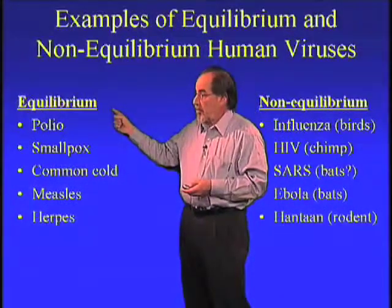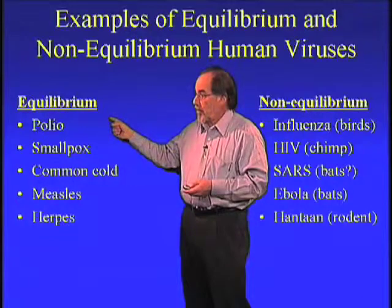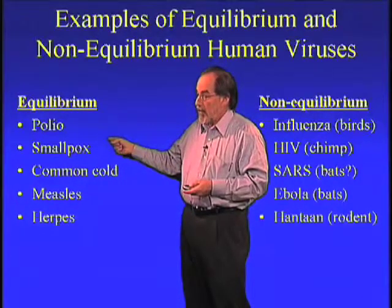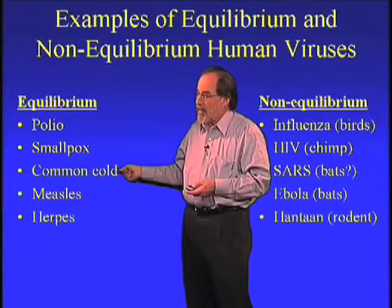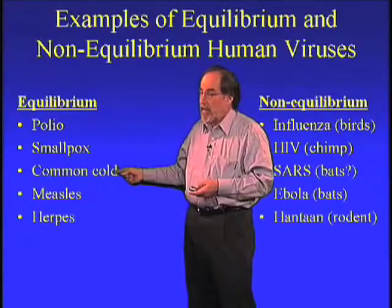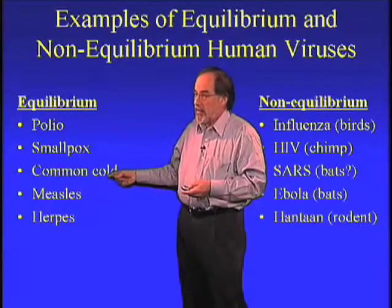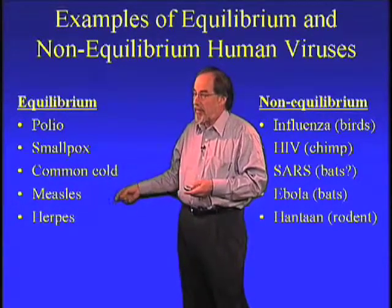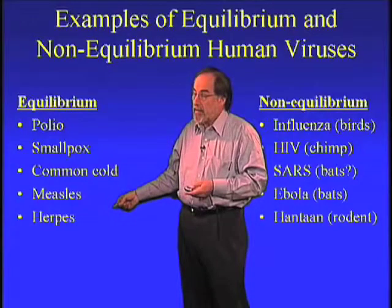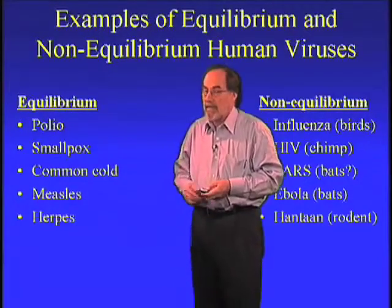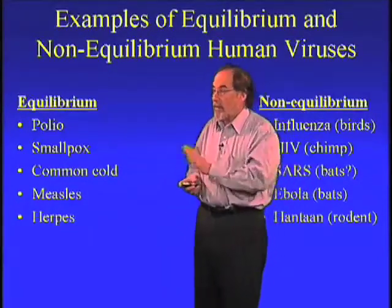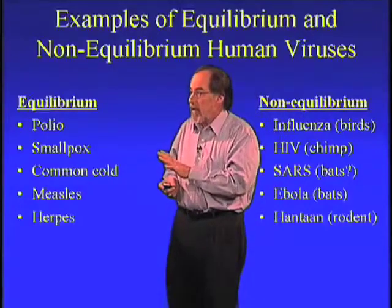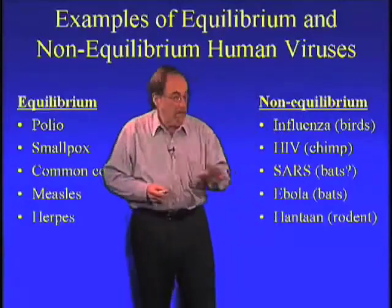Equilibrium viruses: polio virus — almost eradicated; smallpox — eradicated; common cold — there are too many kinds to eradicate it, but it's a standard equilibrium virus; measles, mumps, herpes — lots of them. All actually very specifically human viruses.